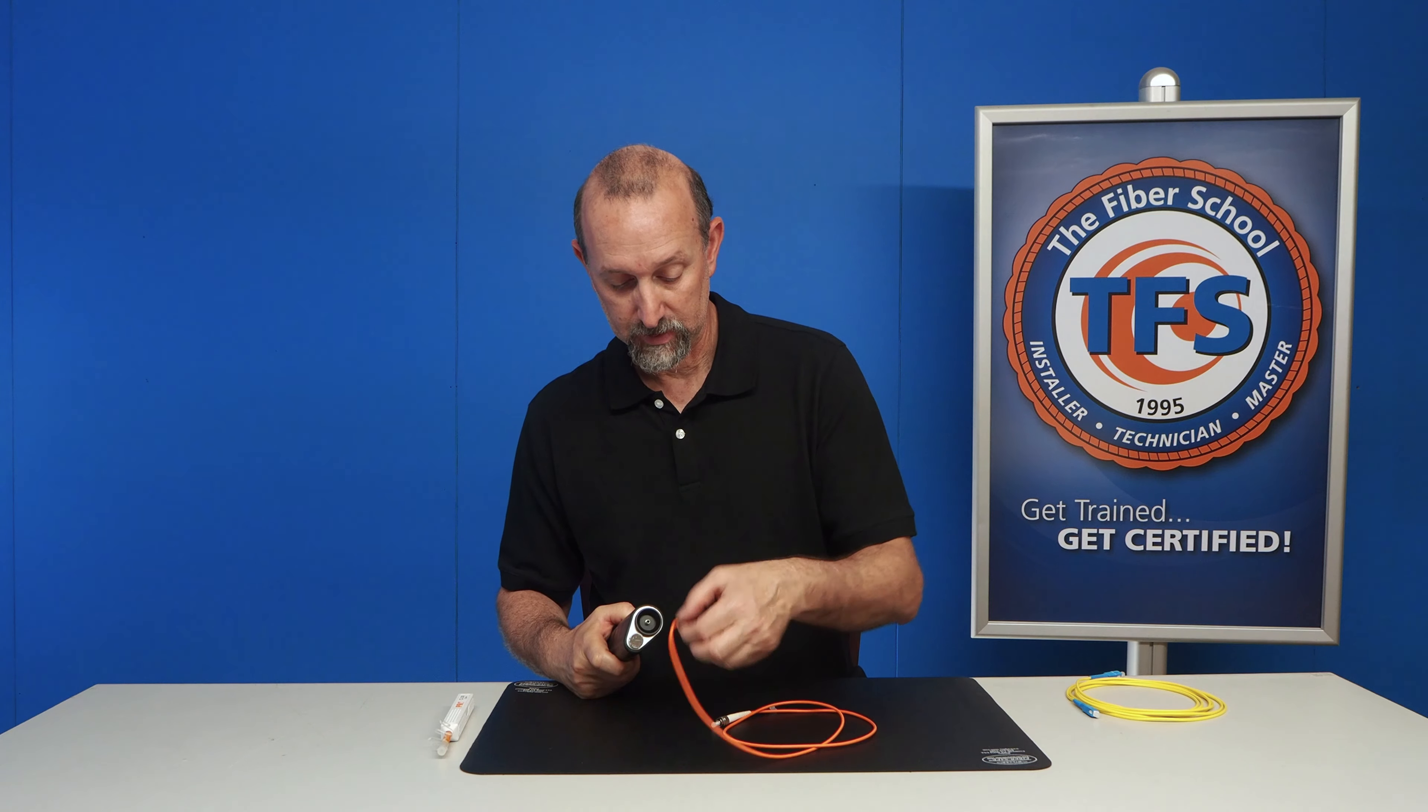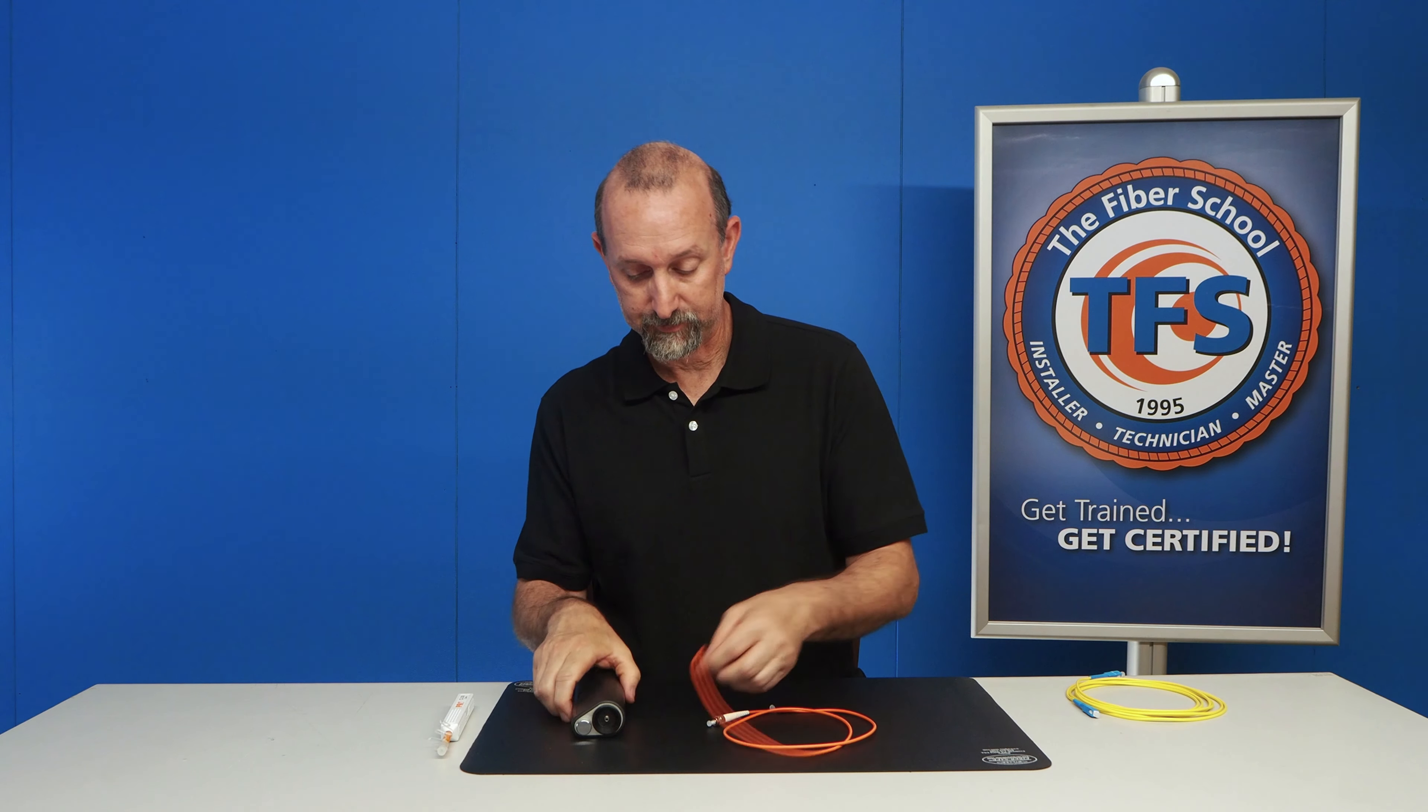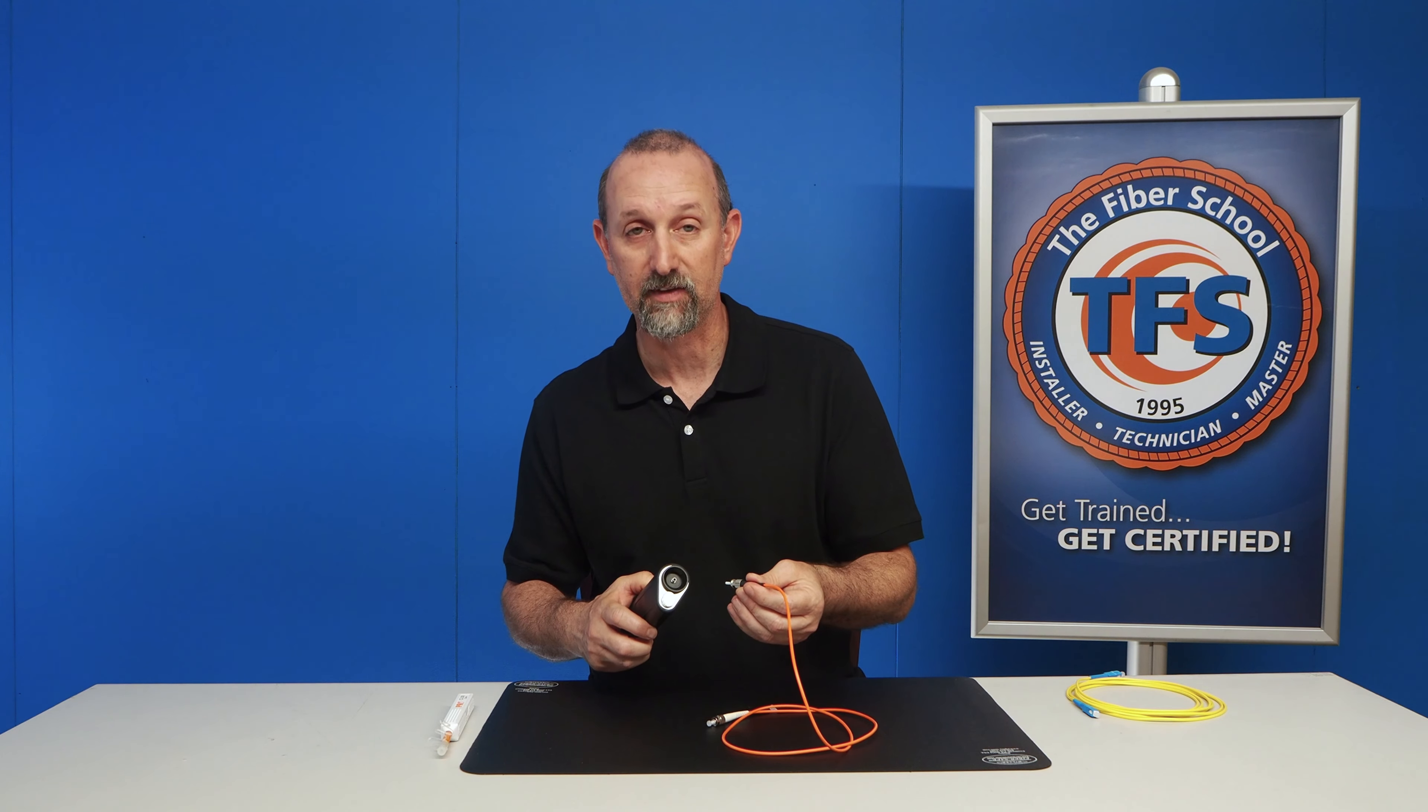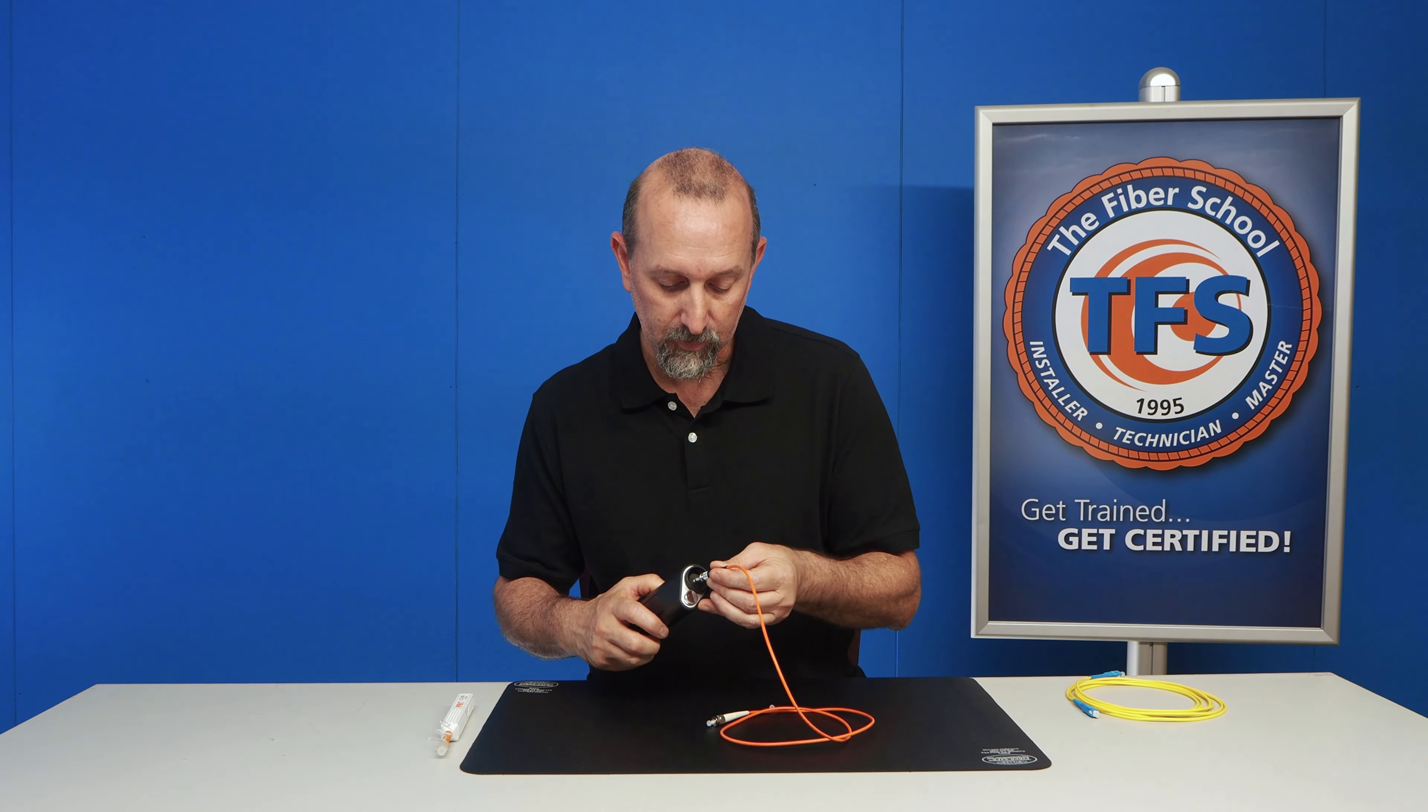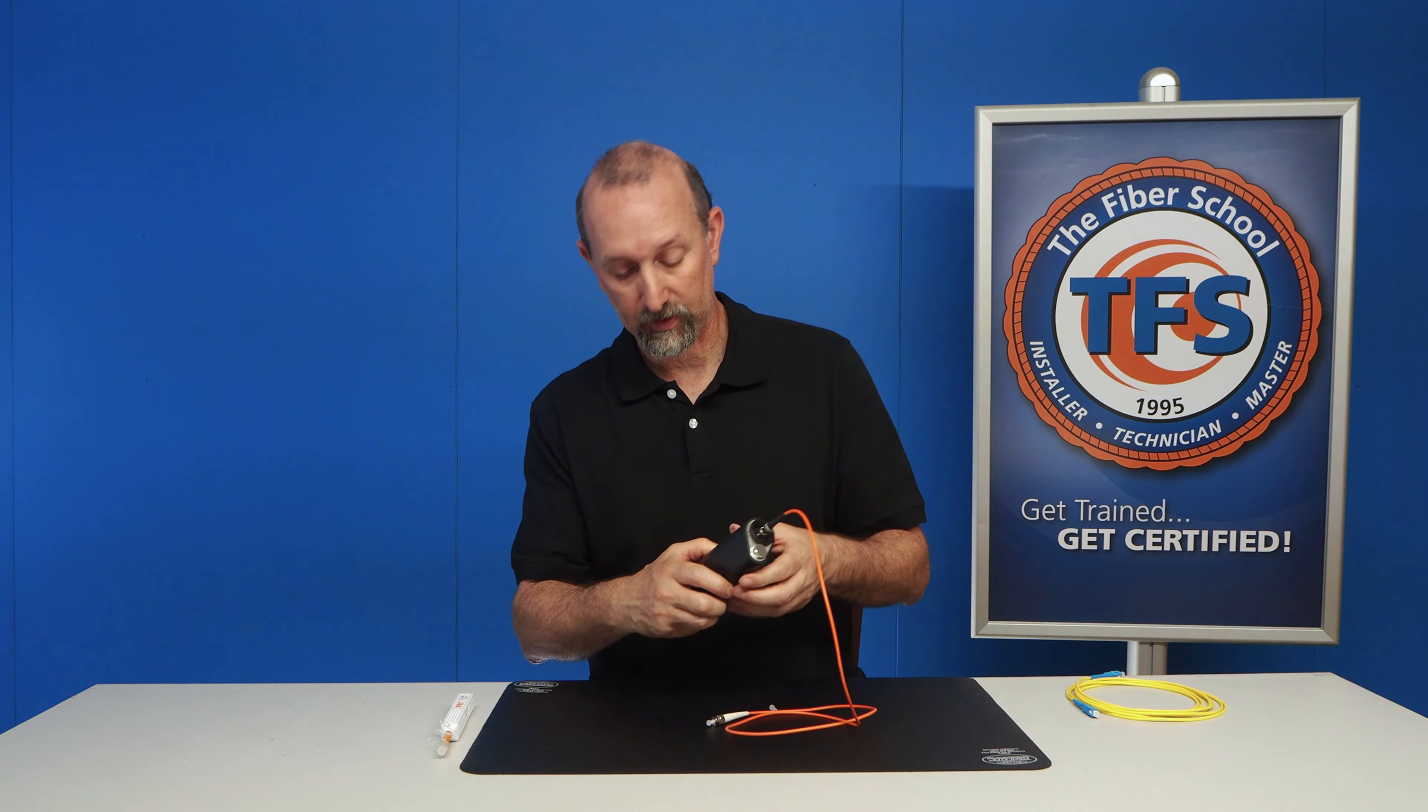So it's pretty simple. You take the dust cap off, and basically what you're doing is you're trying to look and see the end face quality, see if there's scratches and dirt on the end of the end face. You will insert into this.